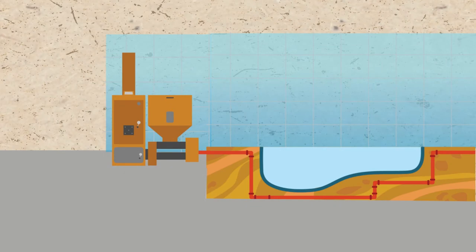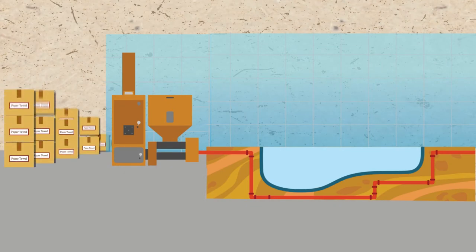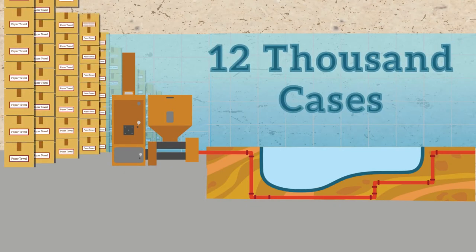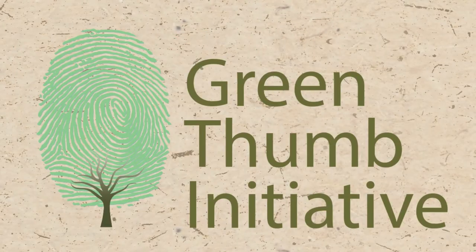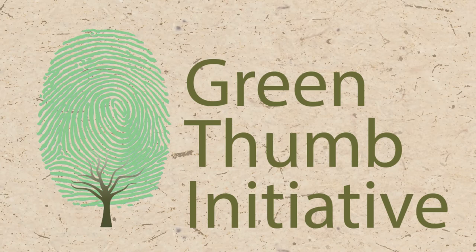The YMCA biomass system requires the equivalent of 12,000 cases of used paper towels per year to run at peak levels. We need your support of the Green Thumb to keep the YMCA pools warm.